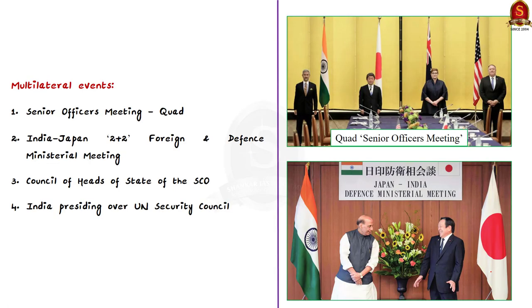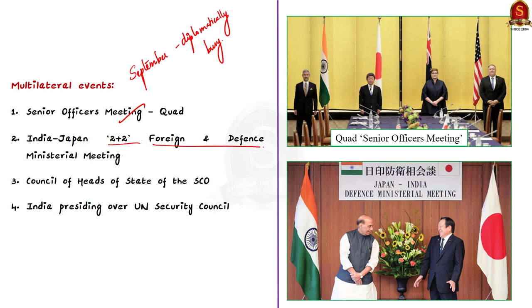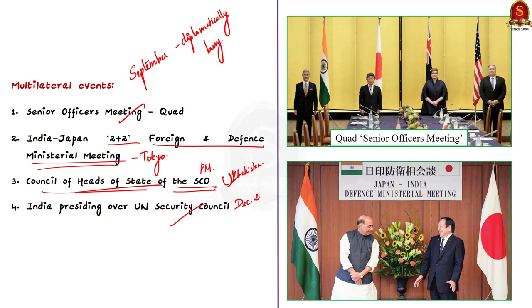The author noted that September is a busy month for India diplomatically, as a number of multilateral events are scheduled. These include the Quad senior officers meeting, the India-Japan 2+2 foreign and defence ministerial meeting in Tokyo, and the Indian Prime Minister is expected to attend the Council of Heads of State of the Shanghai Cooperation Organization meeting in Samarkand, Uzbekistan. Following this, India will also preside over the UN Security Council as president in December 2022.